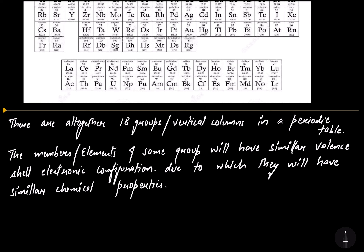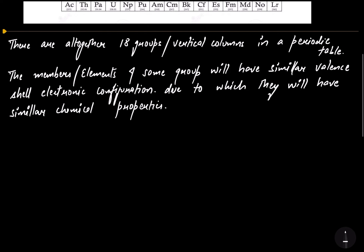As the members of a group have the same number of electrons in their outer valence shell, and we know that during any chemical reaction the electrons of the outermost shell take part, if the number of electrons is the same, the types of chemical reactions they show will also be the same — hence similar chemical properties.